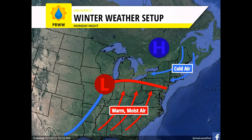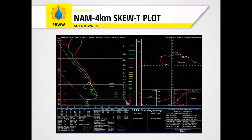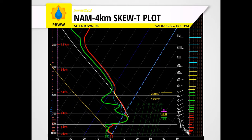Where these two air masses meet and override each other is where we'll see the mixed precipitation tonight. To get a better idea of why we're going to see the sleet and/or ice in some of our northern areas, we're going to take a look at a Skew-T plot. I know this diagram looks extremely complicated, so I'm going to zoom in on the part of the diagram that we really care about in this situation. And I know it still looks extremely complicated, but once I show you how to read this, it'll be easier to understand.